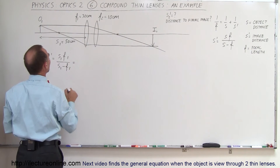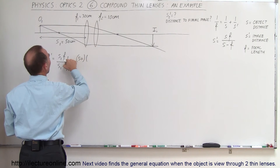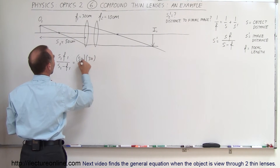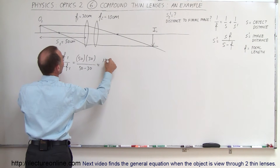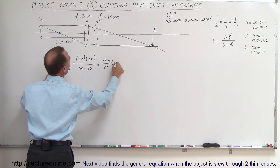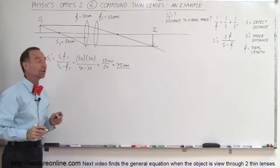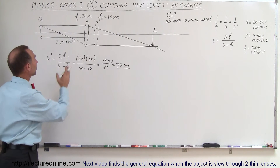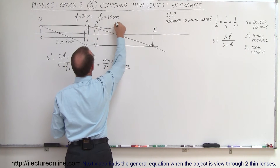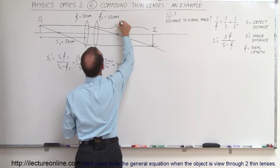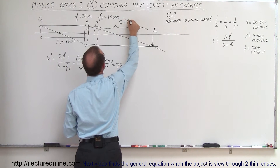Plugging in the numbers — S1 is 50 centimeters, F1 is 30 centimeters — we get 50 times 30 divided by 50 minus 30, which equals 1500 divided by 20, which is 75 centimeters. So the distance from the first lens to the first image is 75 centimeters.